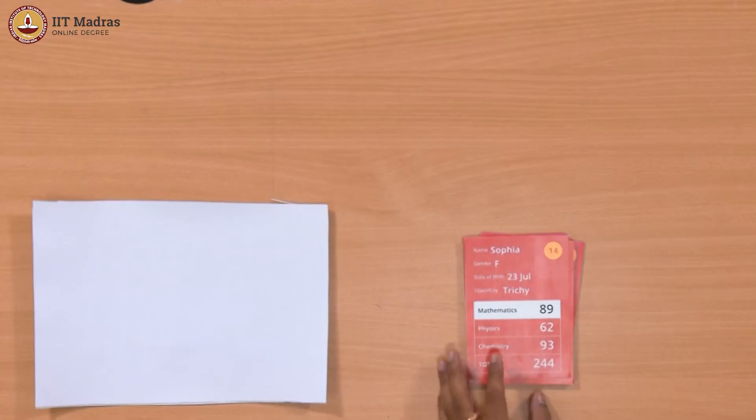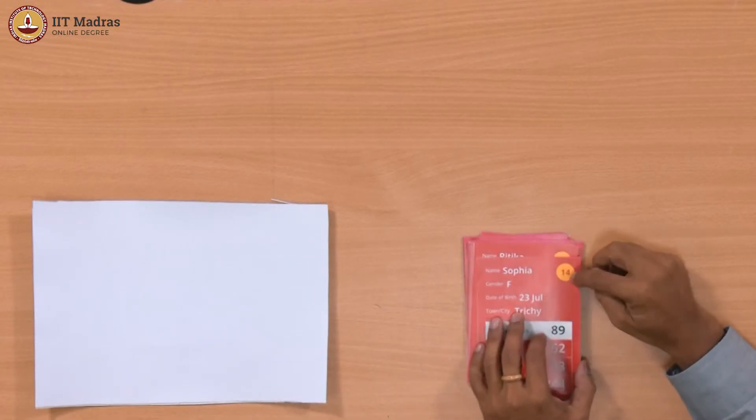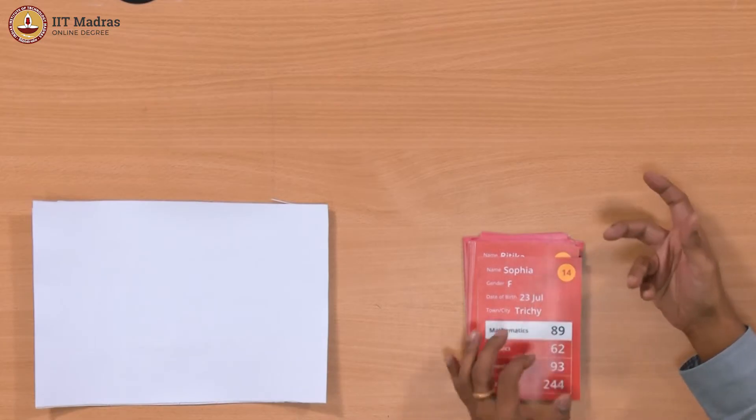So arranging in some order seems to be a very useful thing. But if you are given cards like this, suppose I want to arrange it in some order. Let's say I want to arrange it in the increasing order of this sequence number of the card. How do I do that?